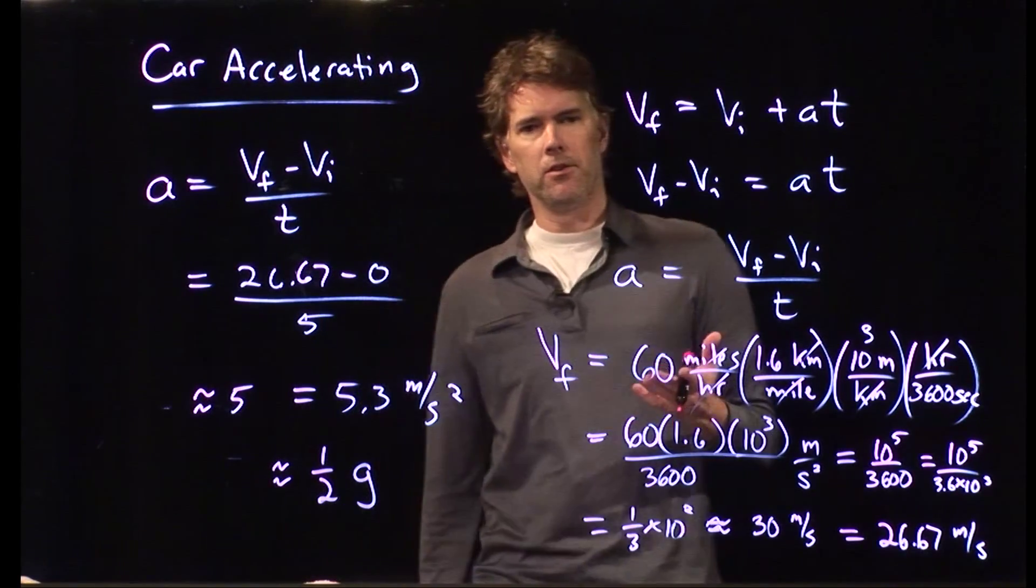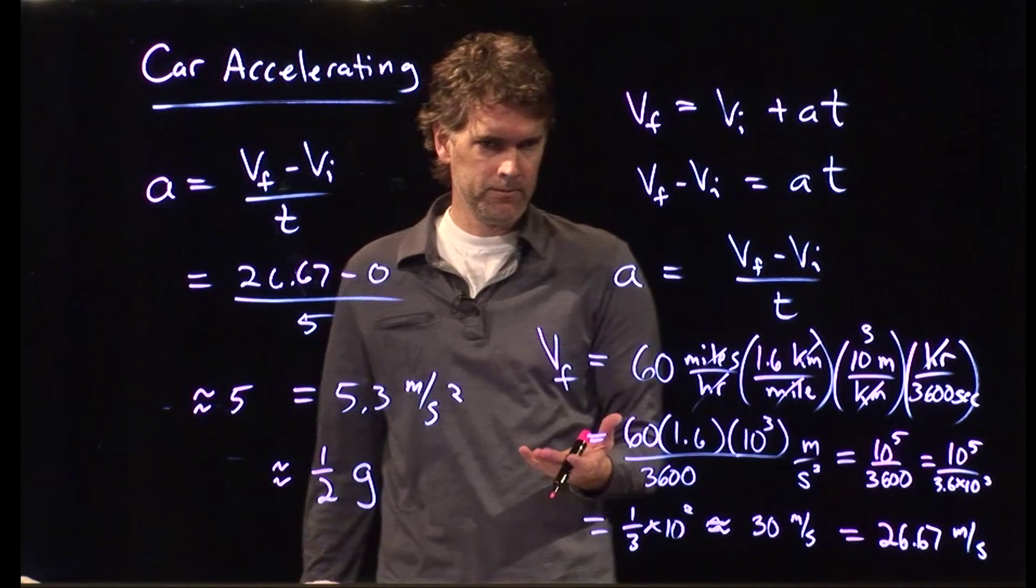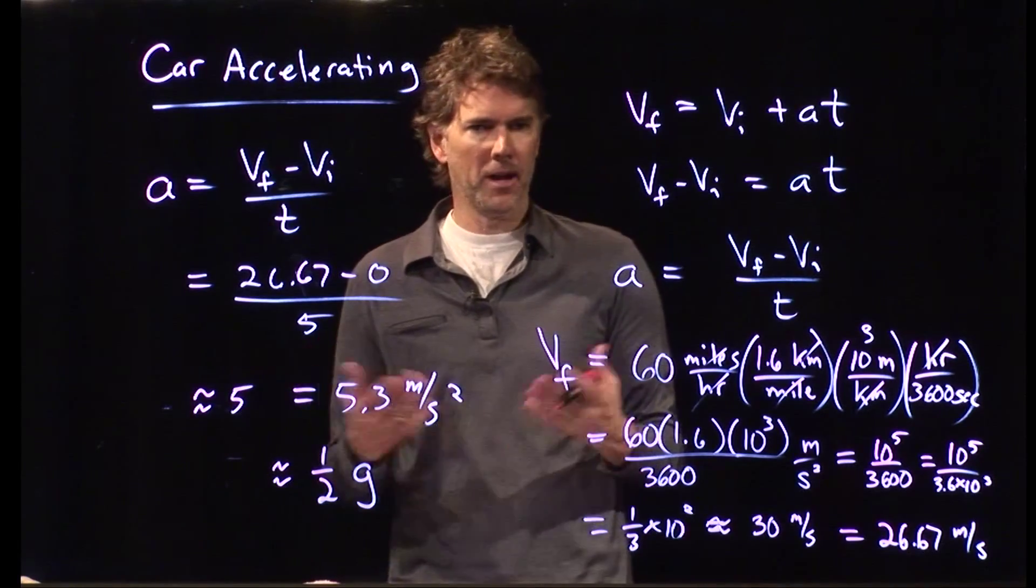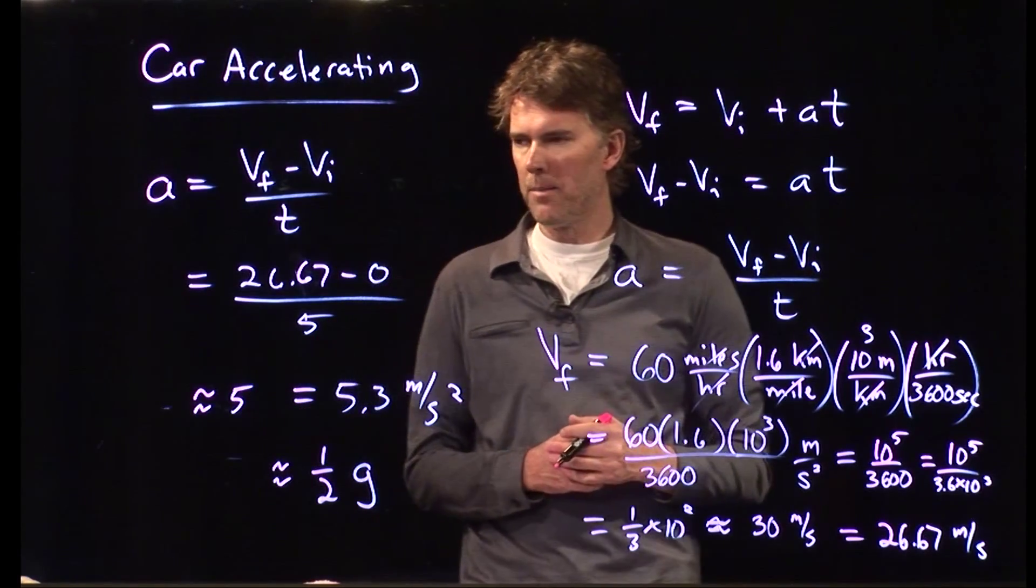Okay, that is the acceleration of your car, 5.3 meters per second squared, which is about a half g. So when somebody says how fast does your car accelerate, you can say a half of g. g is 9.8, 5 is about half of that, so you get about a half g.